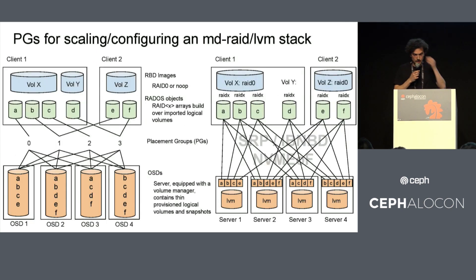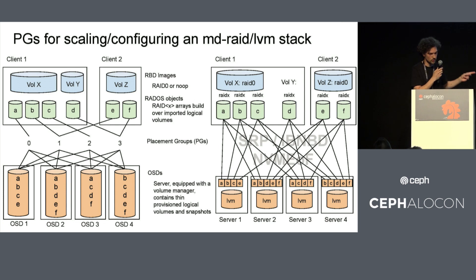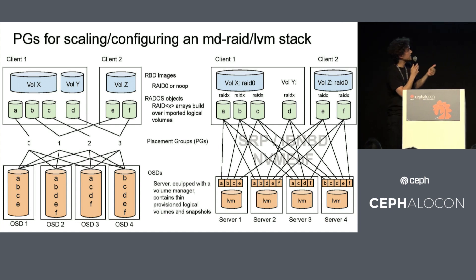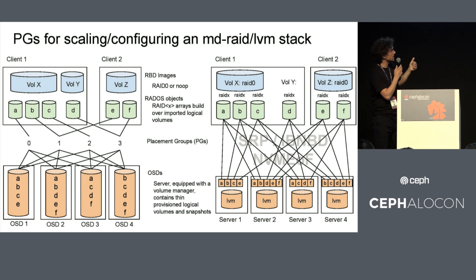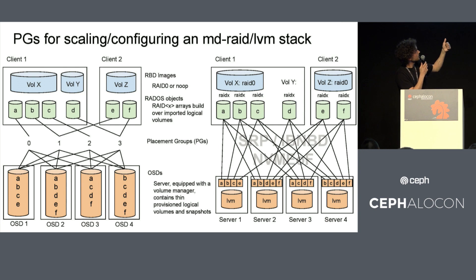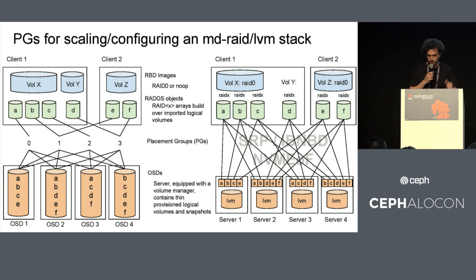As an example, on the left side you can see a very familiar picture of a Ceph RBD setup: RBD images on top, sitting on top of RADOS objects, mapped via hashing to placement groups, which are stored on OSDs. On the right-hand side, you see a stack built using DMThin, where each customer volume — each thin-provisioned volume — is exported with a network protocol like SRP or NVMe over Fabrics to the client. They are built into RAID arrays on the client side, and you can put a RAID0 on top. You can manage this kind of configuration using the same approach as CRUSH, and in theory you could use Ceph monitors to get the configuration for this kind of stack.